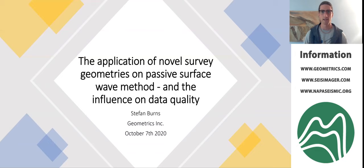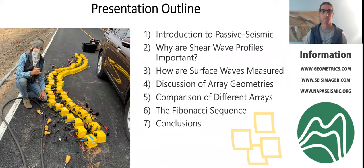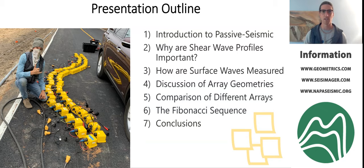Here's our presentation outline. We're going to be talking about passive seismic methods, how they differ from active seismic methods, shear wave velocity profiles, why they're important, where they're used, surface waves and how you can use surface waves to create shear wave velocity profiles, and the different array geometries that you would use to collect these surface waves. We're then going to show some data comparisons between these different survey arrays and then how the Fibonacci sequence can apply to all of this and how it can improve your data quality.